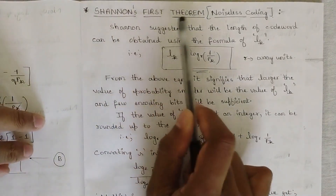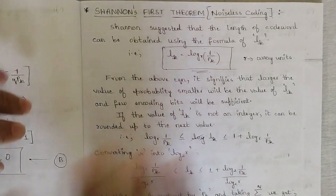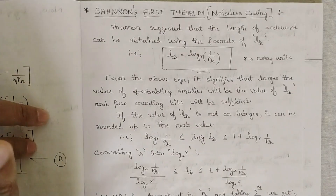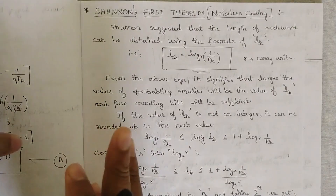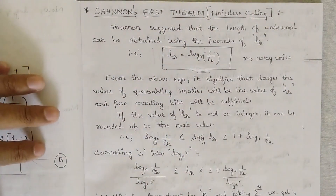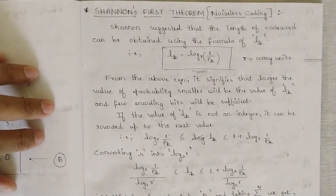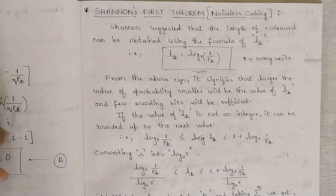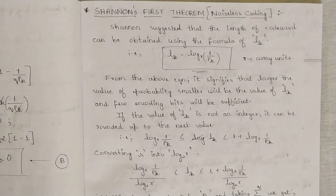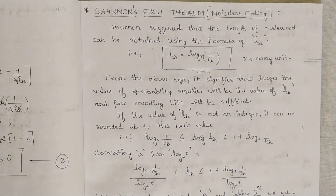That is Shannon's first theorem. Shannon is basically the father of information theory. He is a scientist. He has introduced two different theorems with respect to noiseless coding and source coding. The first theorem is based on noiseless coding and the second theorem is based on source coding, which we are going to see in the upcoming part of this module. But before that, this noiseless coding part is very important. We are having some conclusions based on which we are going to be generating Shannon's encoding algorithm, and they are going to be asking problems based on that algorithm.